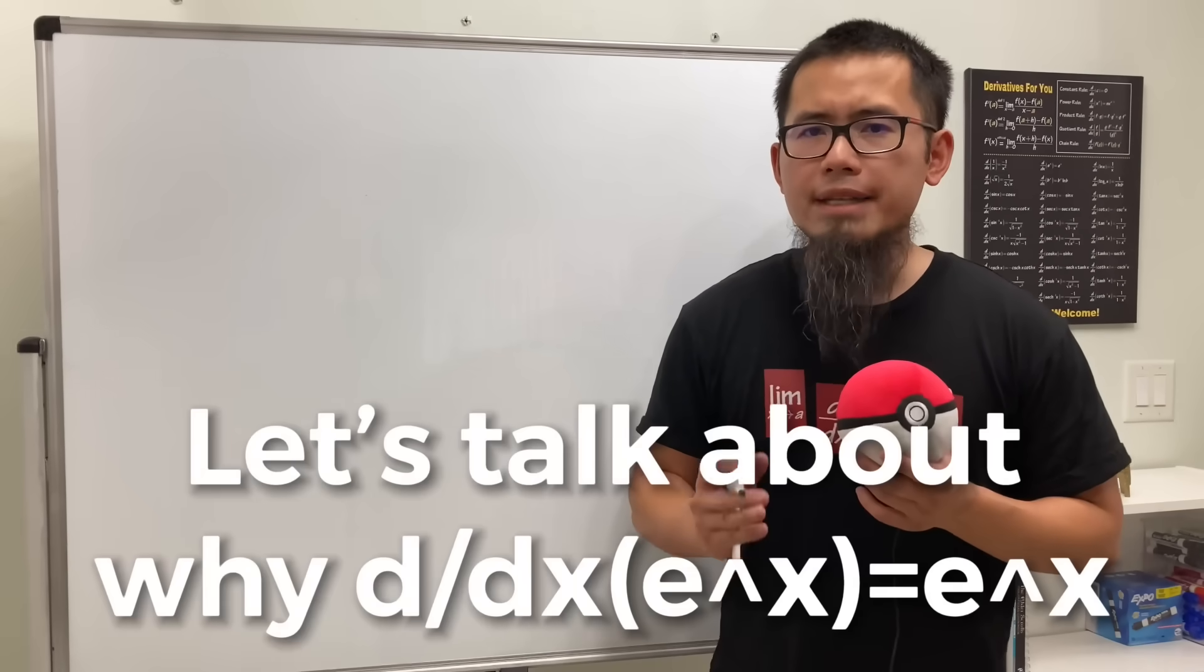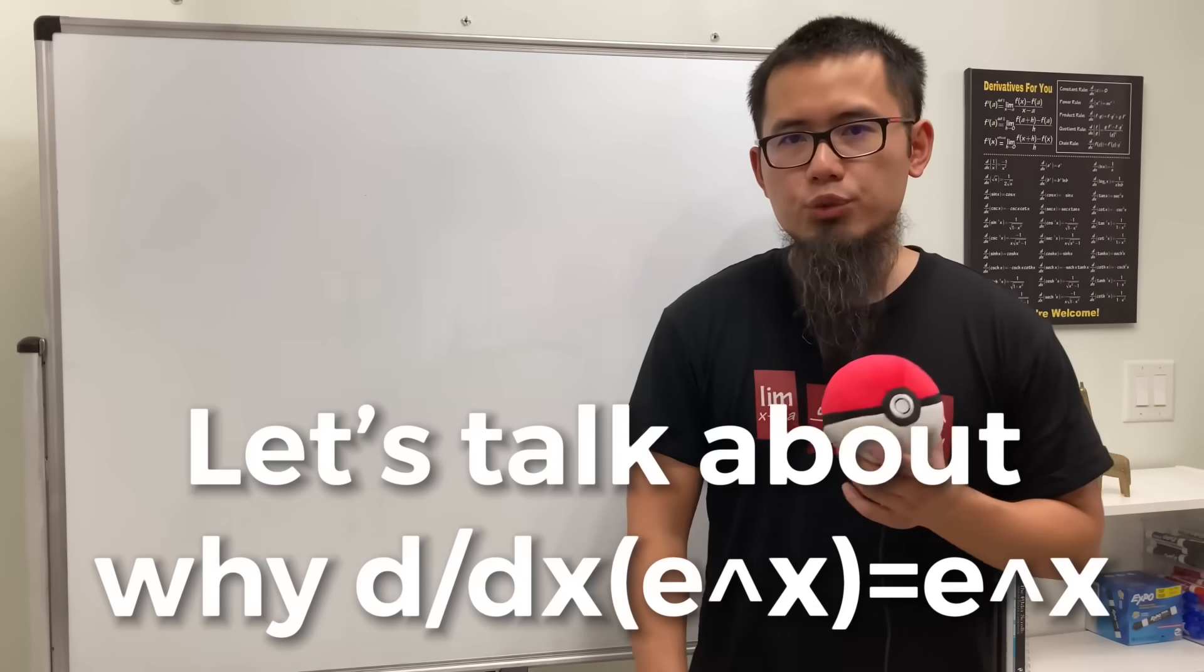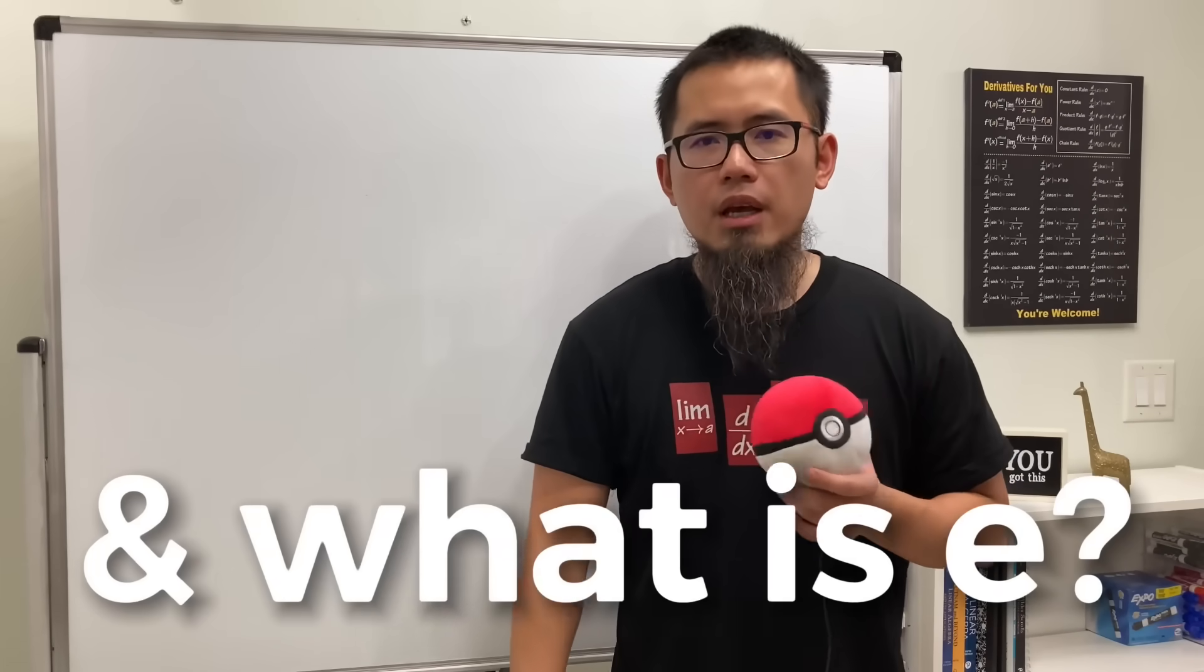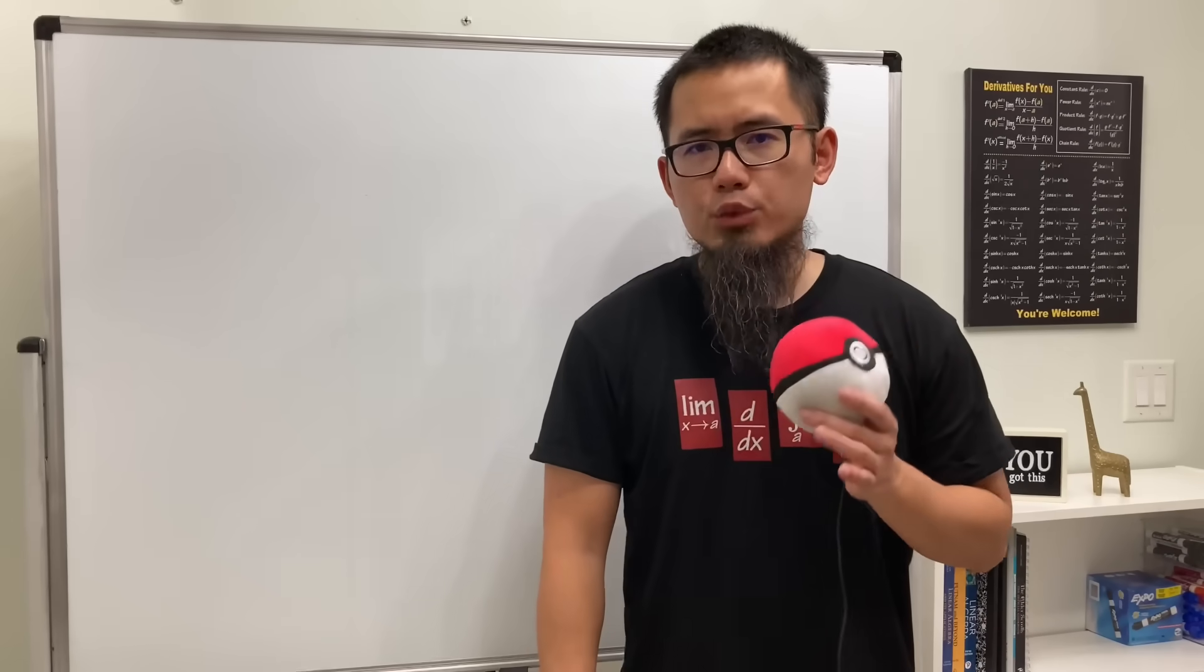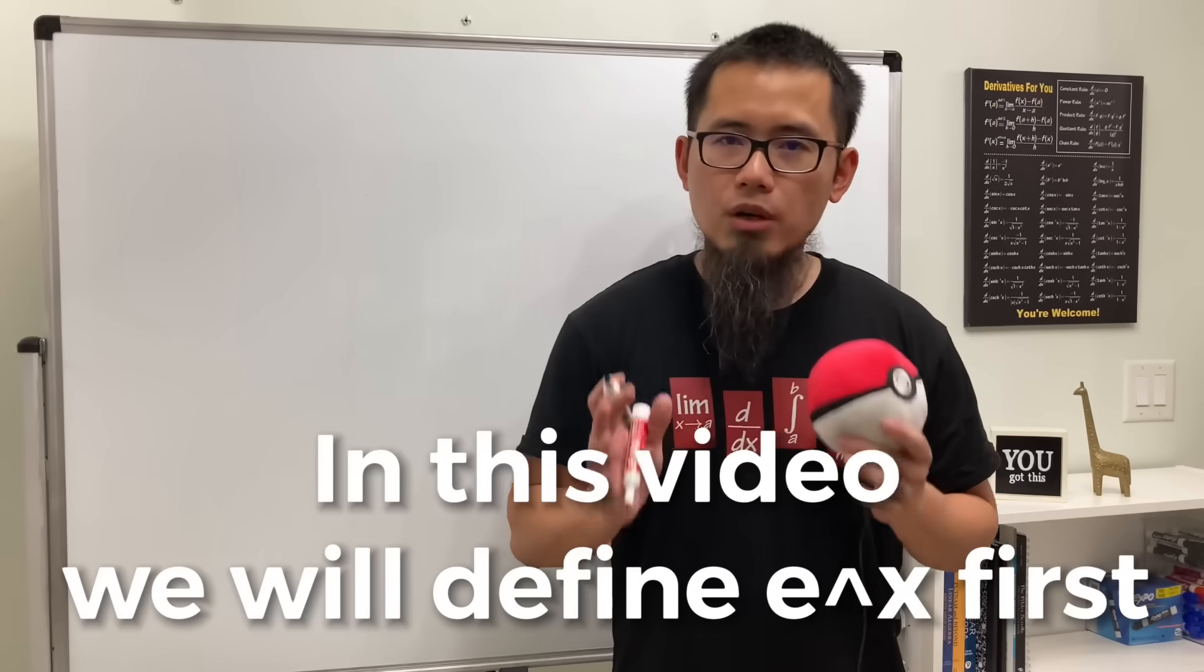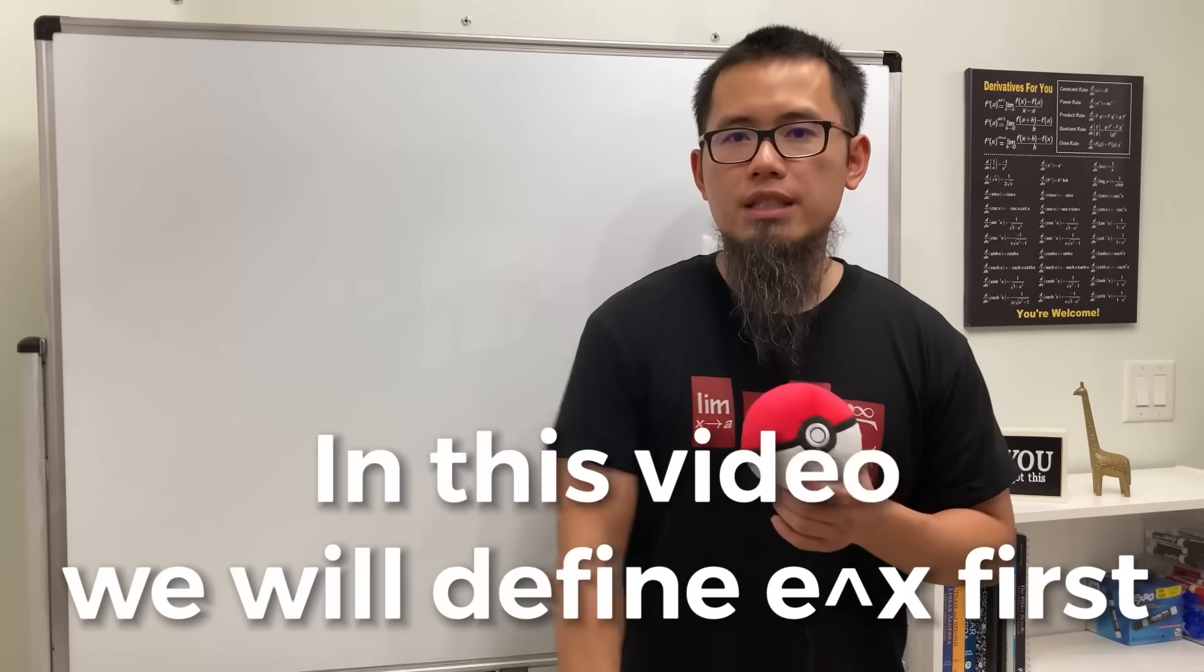Okay, today let's talk about why the derivative of e to the x is equal to e to the x. And more importantly, we should talk about what's the number e. A quick answer for that is it really depends on how we define e to the x and also its inverse, namely natural log of x. In this video, let's talk about if we want to define e to the x first.